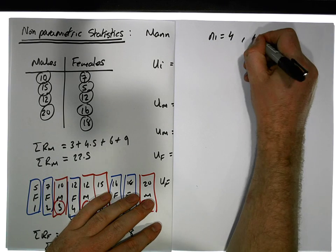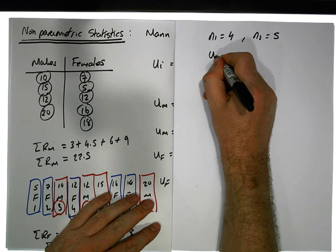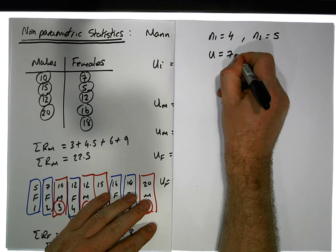So let's just keep in mind the sample sizes: n1 for the males is 4, n2 for the females is 5.